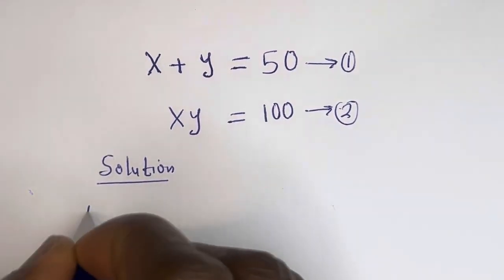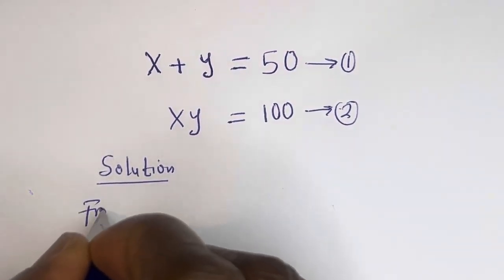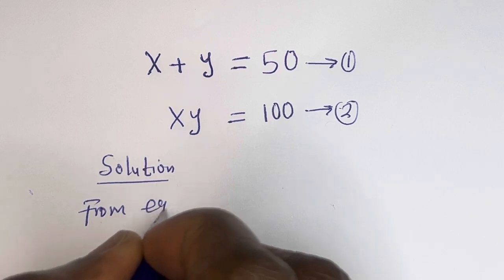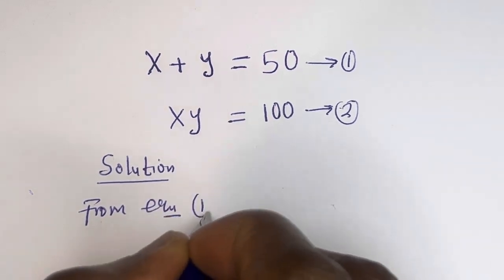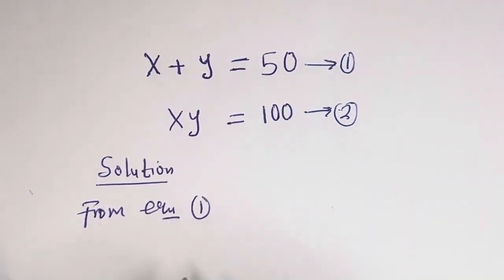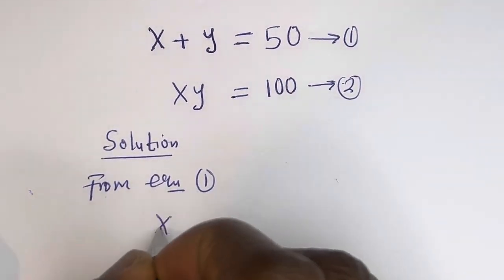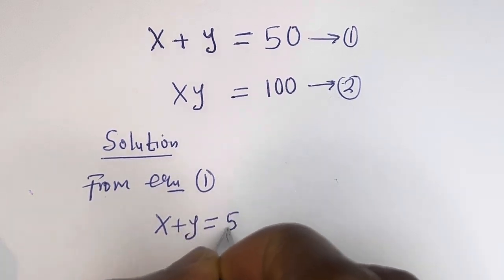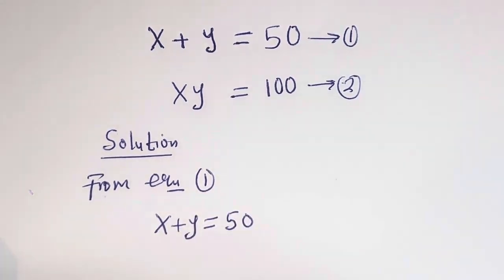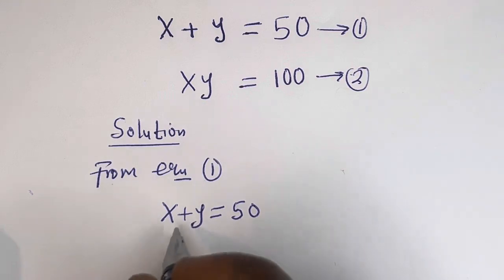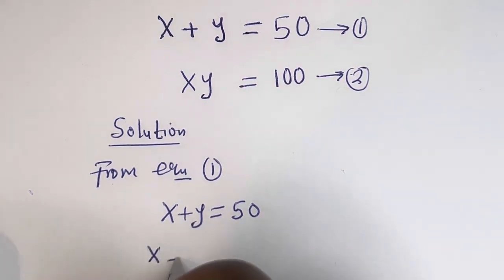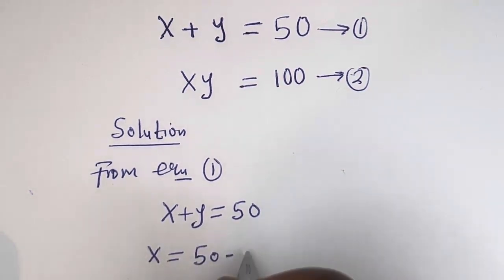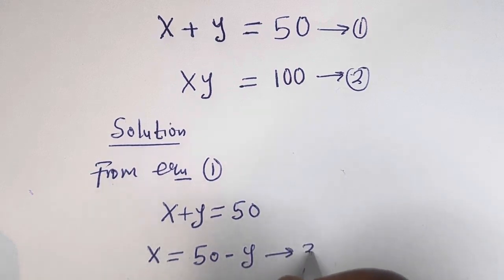Then from equation 1, x plus y is equal to 50. Let's make x the subject of the formula: x is equal to 50 minus y. Let's call this equation 3.